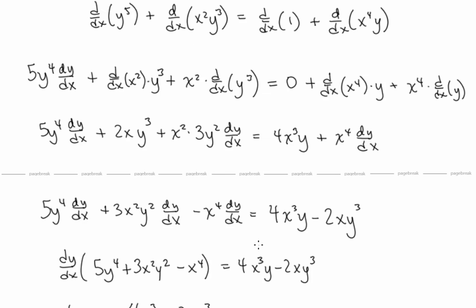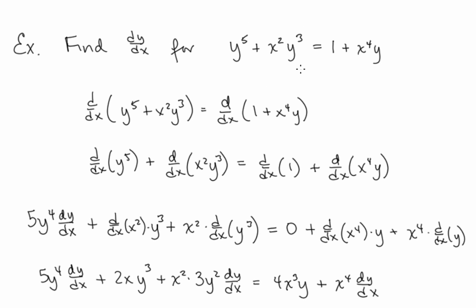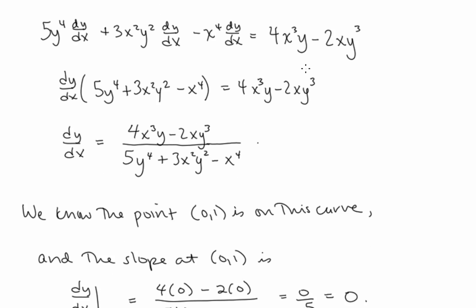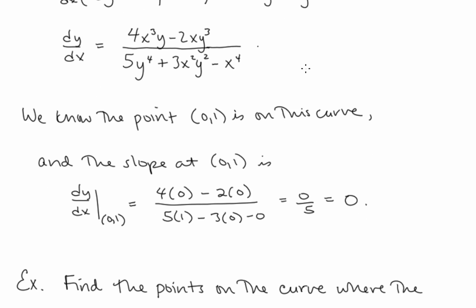By looking at the original equation we can verify that the point (0, 1) lies on the curve. So the slope at (0, 1) is dy/dx evaluated at x = 0, y = 1, and that slope equals 0.